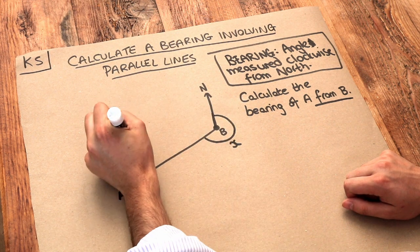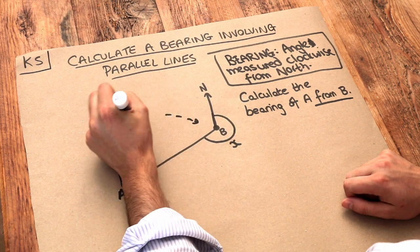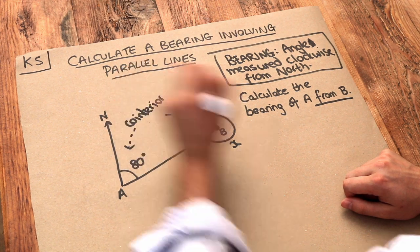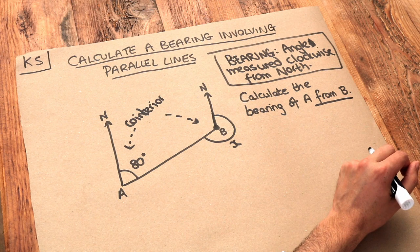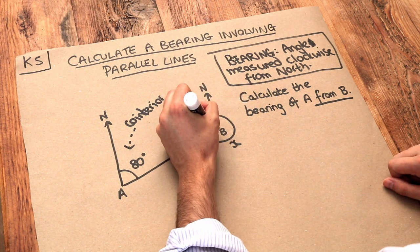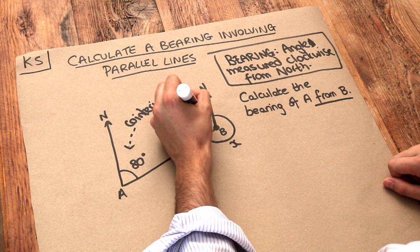They're co-interior angles. And remember that co-interior angles add up to 180 degrees. I covered this in another video. So if we do 180 minus the 80, that gives us an angle here of 100 degrees.